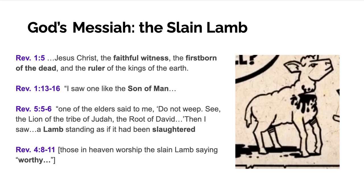The second image we're given in chapters four and five — and really the main character of the book — is Jesus. The book is called the Revelation of Jesus Christ; that's what John tells us. What's being revealed is Jesus and who Jesus is. God's Messiah, which we learn in chapter five, is also the slain lamb. In chapter one, Jesus Christ is described as the faithful witness — bearing witness to who God is even to the point of death — the firstborn of the dead, the first one raised to new life, and ruler of the kings of the earth.